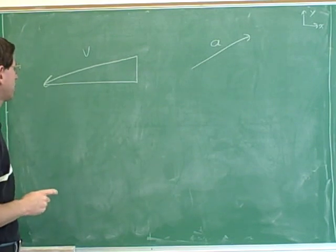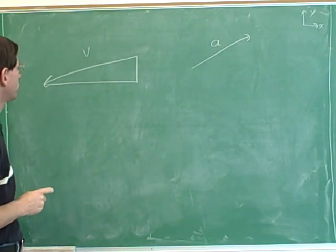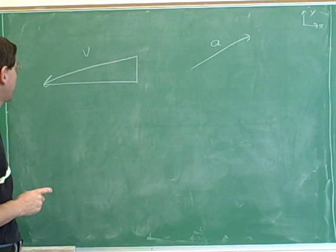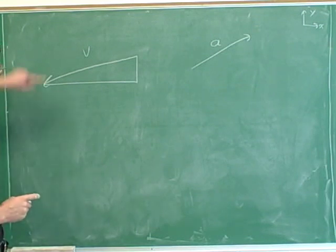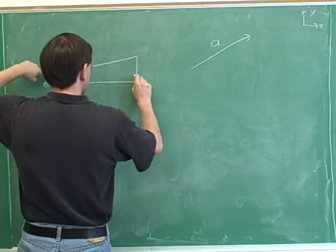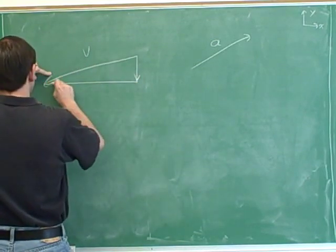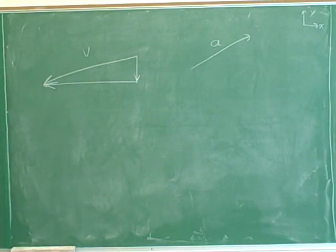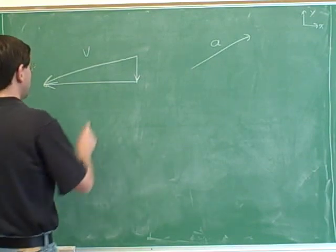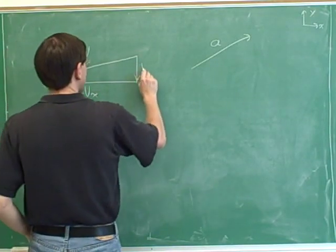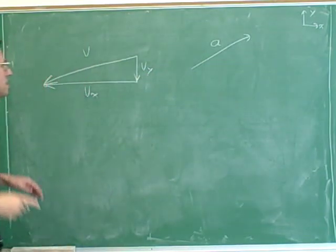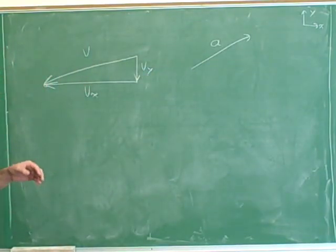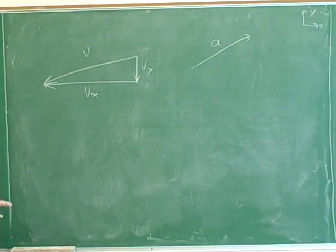This is useless unless we put arrows on the components. The overall vector is pointing down and to the left, so the components should be pointing down and to the left. Don't leave out those arrows. And don't forget to label every leg — this is V sub X and this is V sub Y. Please label all three legs of your triangles all the time. Labeling everything is a very helpful practice in physics.